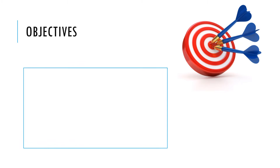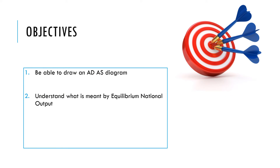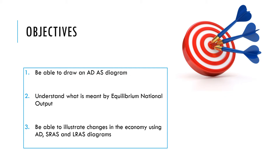In this video we're going to look at equilibrium from an economics perspective. We're going to look at how you draw an ADAS diagram, then what is meant by equilibrium national output, and finally how to use ADAS diagrams to illustrate changes in the economy.